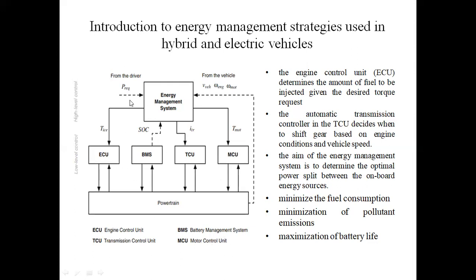There are two types of arrows in the diagram: one thick line arrow and one dotted line arrow. The dotted line arrow comes from the drive as a reference signal. There are three speed signals: VES is the vehicle speed, WENG is the engine speed (internal combustion engine), and WMOT is the motor speed.